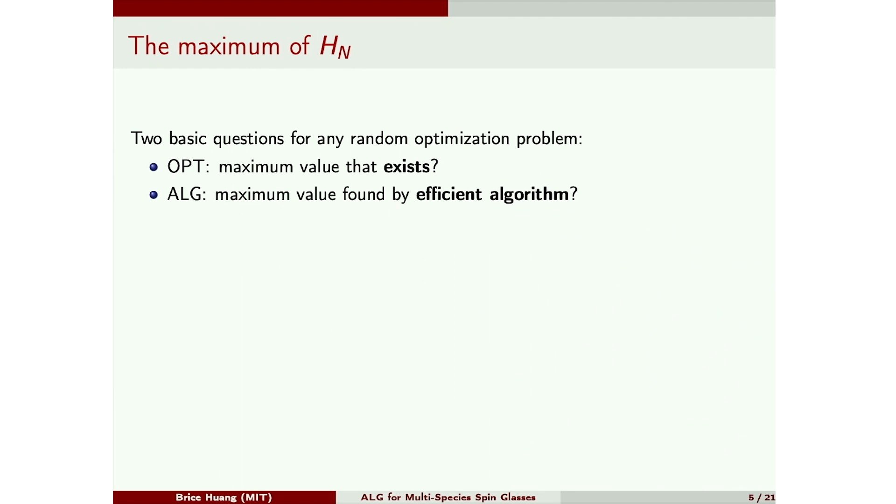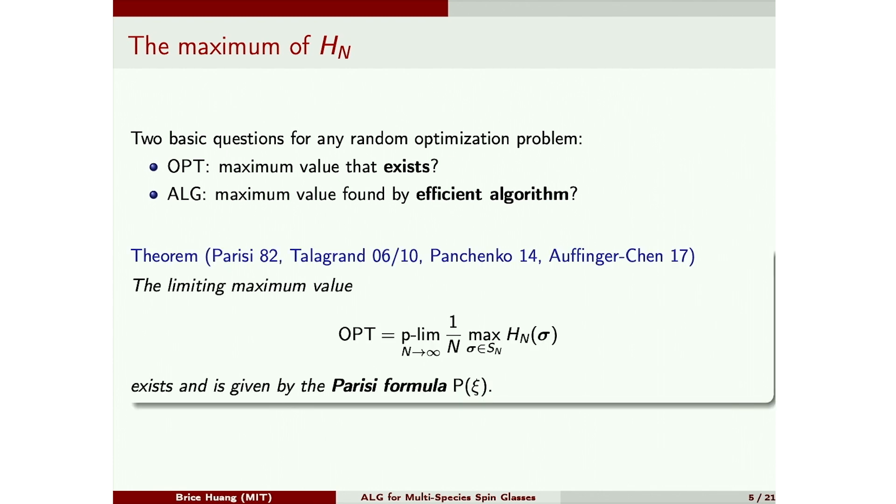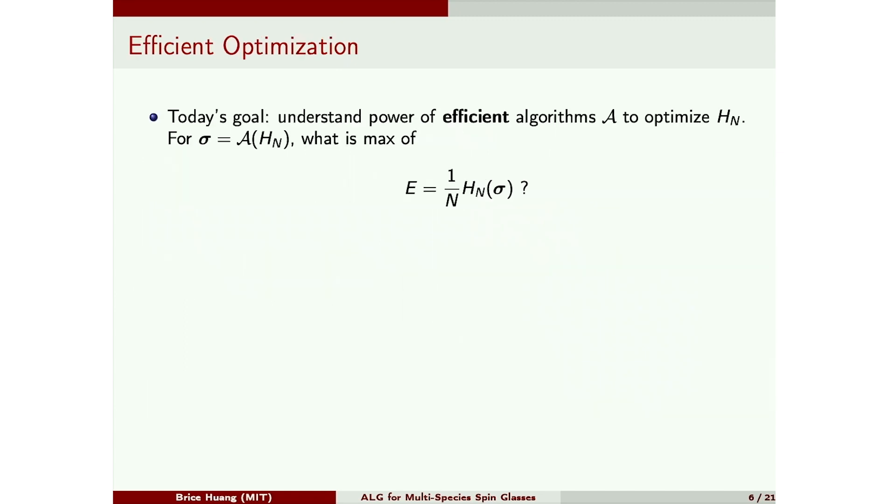With any random optimization problem, there's two basic questions you can ask. You can ask what's the largest value that exists, and what's the largest value that an efficient algorithm can find. For this model, the first question is very well understood. So the maximum value is given by the famous Parisi formula, which was the result of several decades of work. In this talk, we'll be interested in the algorithmic question. So suppose you are an efficient algorithm, and someone hands you some description of H, like a list of the disorder Gaussians. And your job is to output a point sigma on the sphere where H of sigma is big. How well can you do?